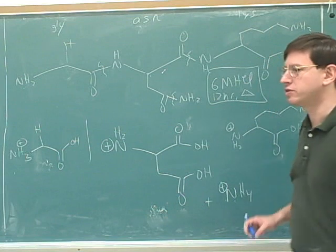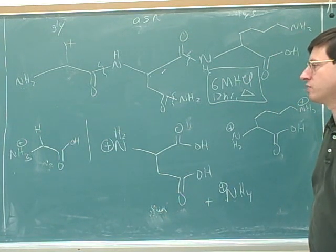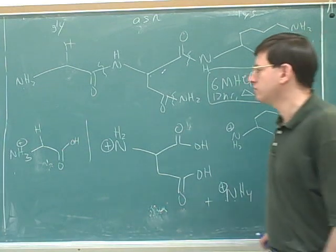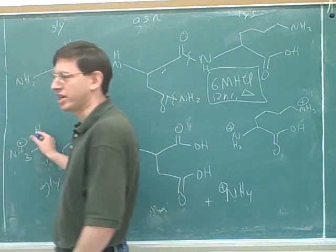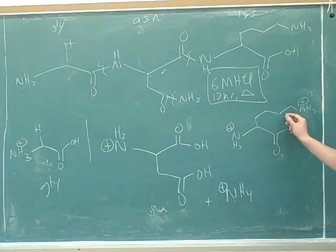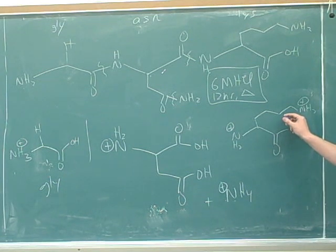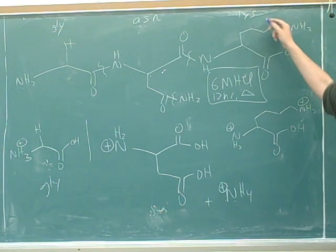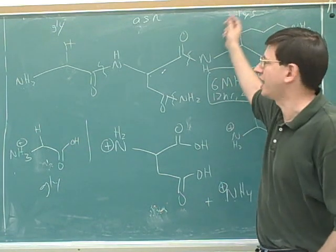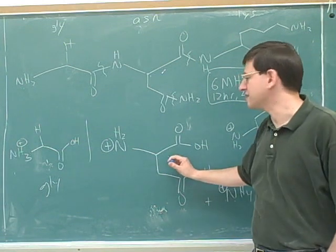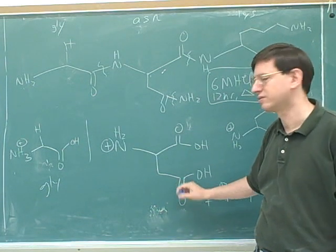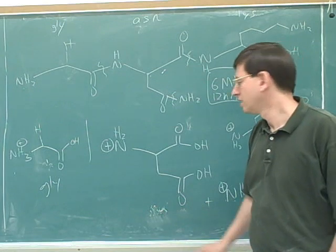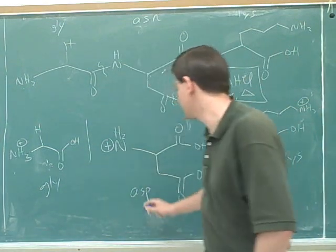Let's say we have a tripeptide. We do total acid hydrolysis and run it through the computer, and the computer tells us what amino acids it was made out of. The computer would say glycine — it detects that side chain. And then there's lysine. But when the computer looks at the third fragment, it says aspartic acid, which is in the acid-containing functionalities section of your table.